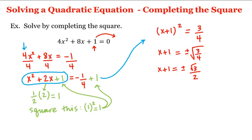And then we'll subtract 1 from both sides of the equation, which gives us x equals negative 1 plus or minus the square root of 3 over 2.